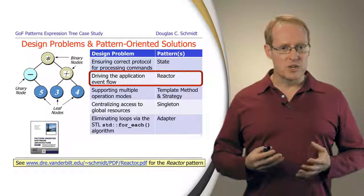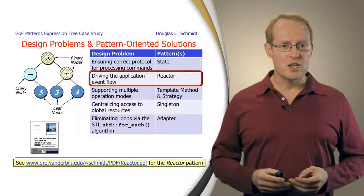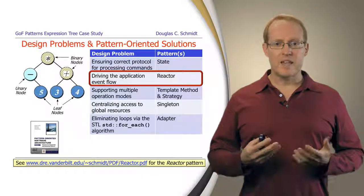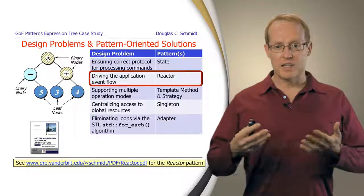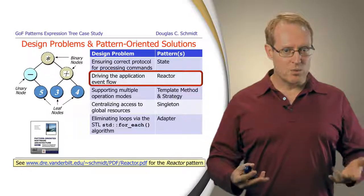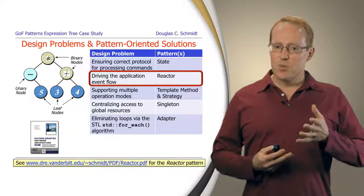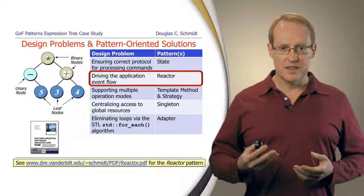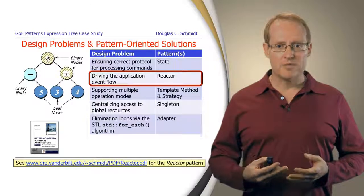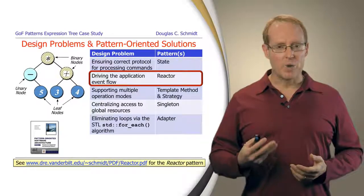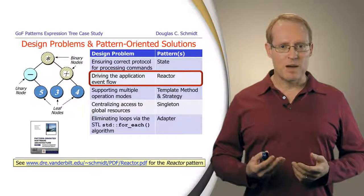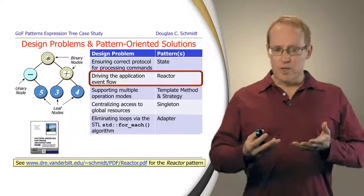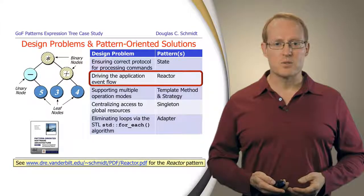The next thing we're going to do is we're going to use a pattern that's going to structure our overall application. And we'll do this in order to be able to decouple where the input comes from and how that input is dispatched to various kinds of event handlers that perform the work of the expression tree application. This is one part in this module where we're going to deviate ever so slightly from the patterns in the Gang of Four book. And instead, we're going to cover a pattern from the POSA 2 book, Pattern Oriented Software Architecture Volume 2 book, which talks about patterns for concurrent and distributed objects. And we're going to be applying the reactor pattern. You can read about the reactor pattern at this link or by looking at the POSA 2 book.